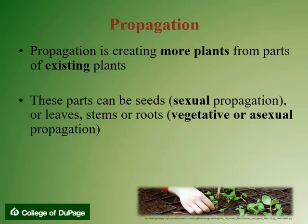There are many ways of propagating or reproducing plants. Propagation can be defined as creating more plants from parts of existing plants. These parts can be seeds, which is also known as sexual propagation, or leaves, stems, or roots, which is known as vegetative or asexual propagation.